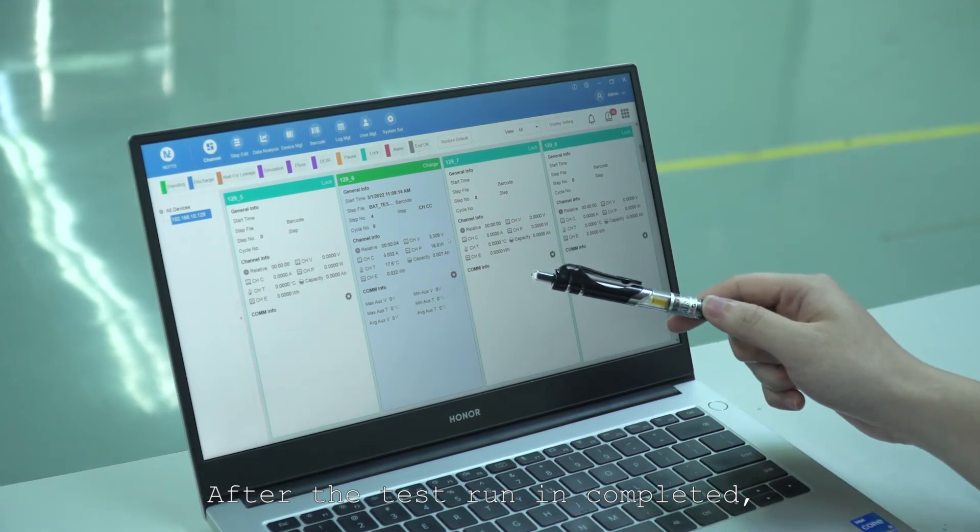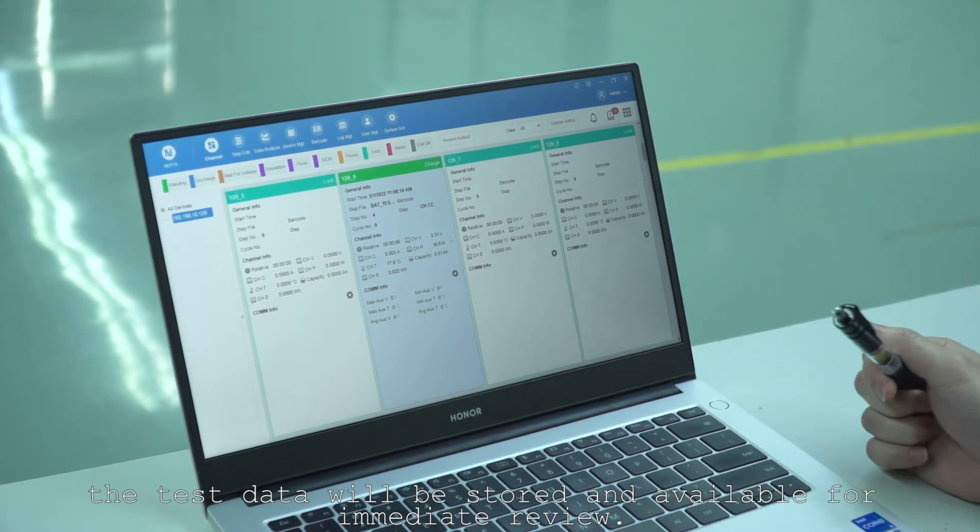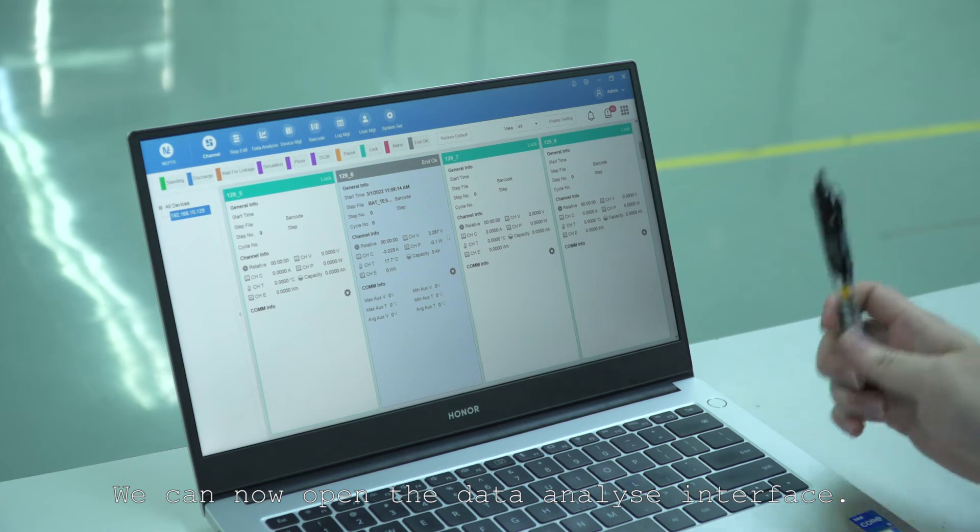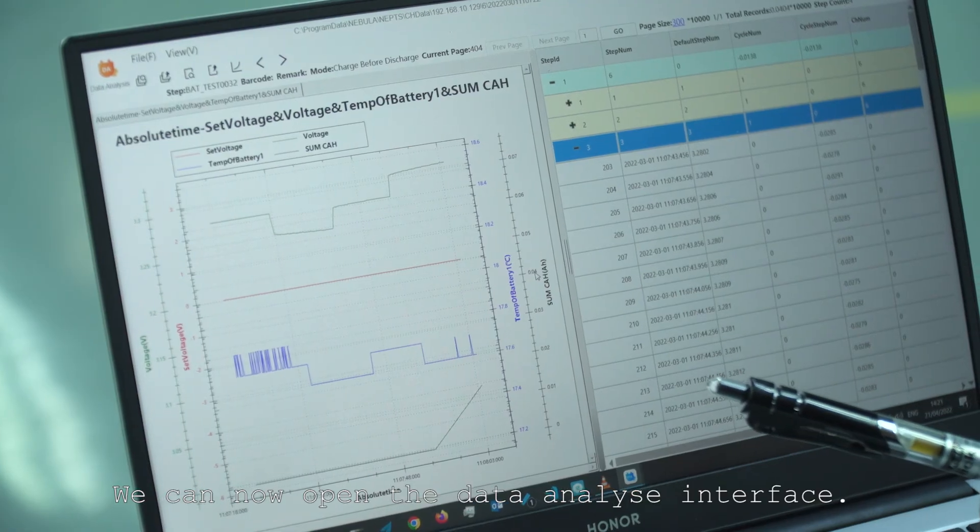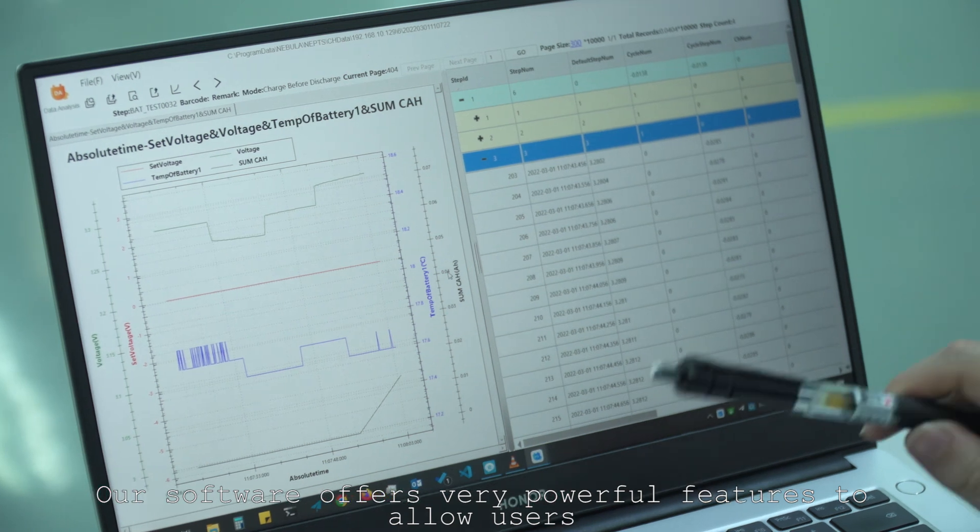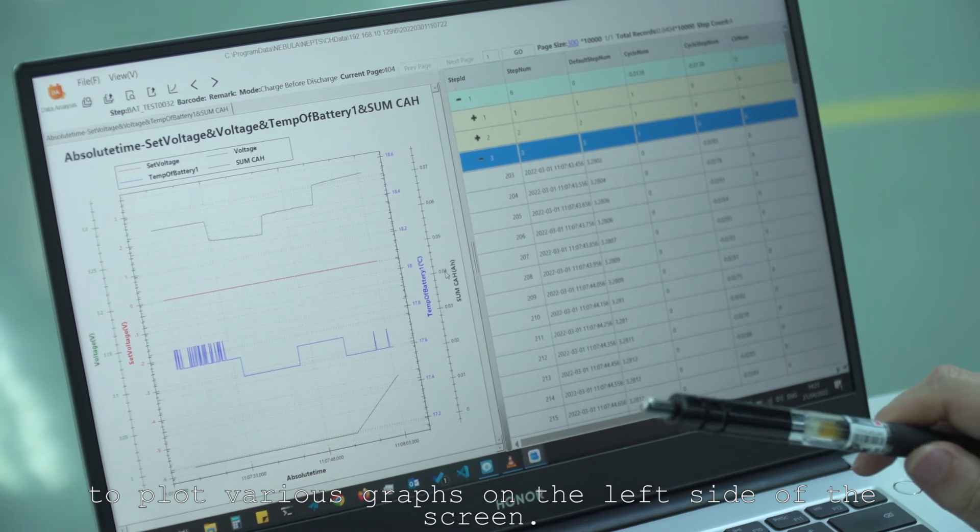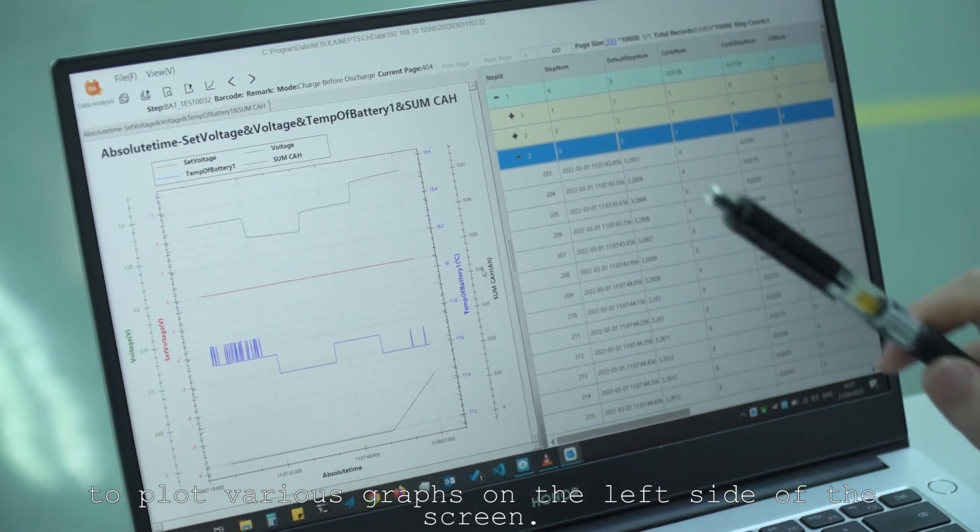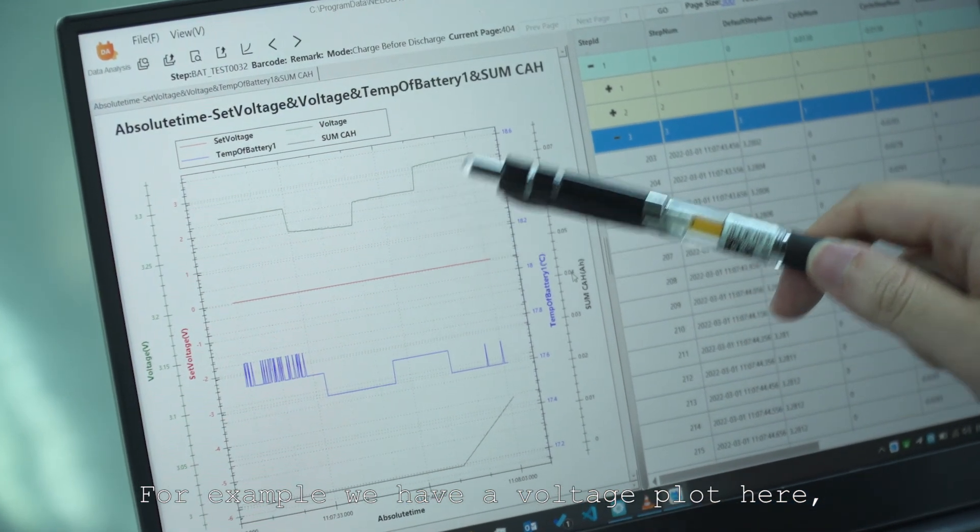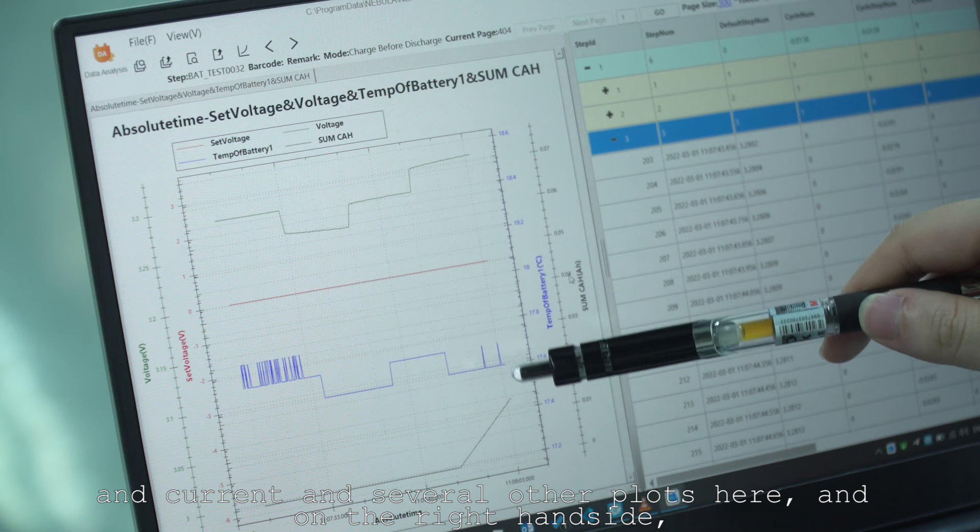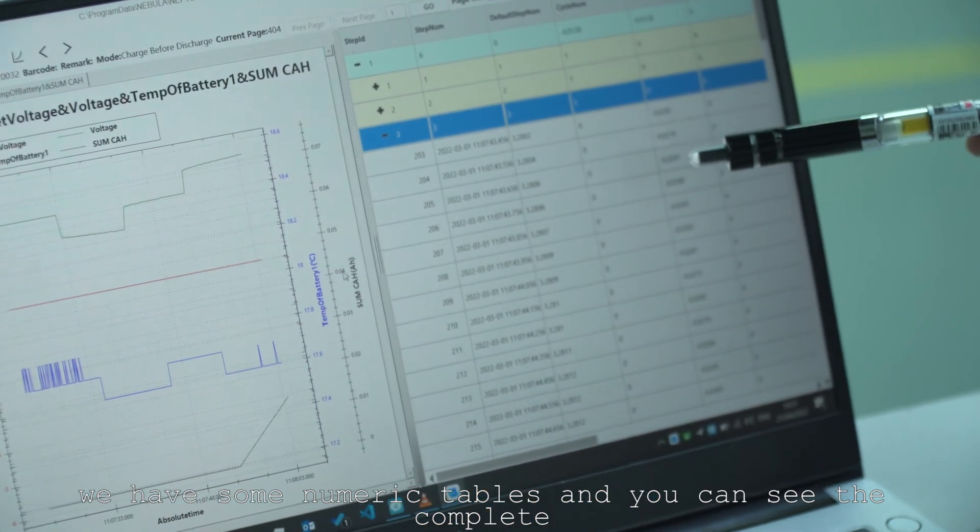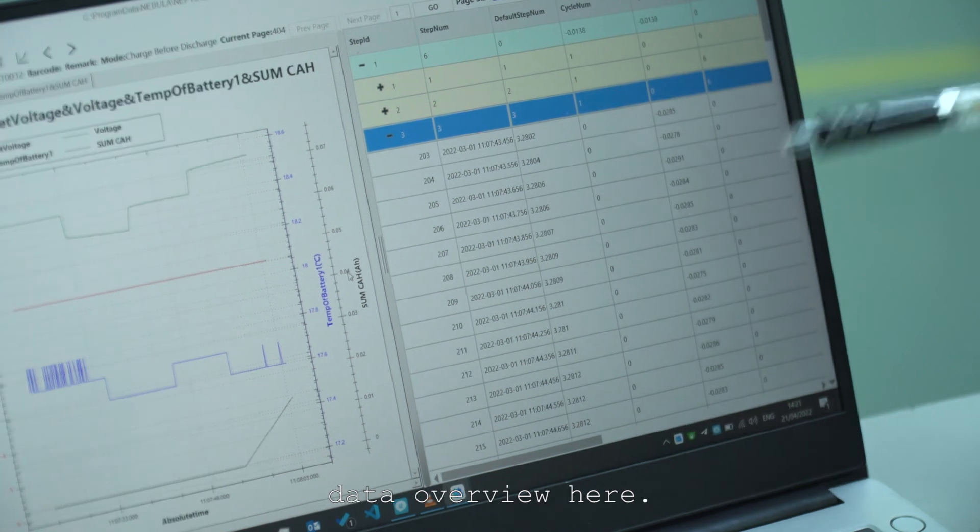After the test run is completed, the test data will be stored and available for immediate review. We can now open the data analysis interface and our software offers very powerful features to allow users to plot various graphs on the left side of the screen. For example, we have a voltage plot here and current and several other plots here. And on the right-hand side, we have some numeric tables and you can see the complete data overview here.